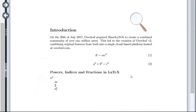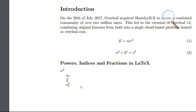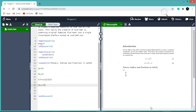So here you can see a₁². In this way you can write both powers and indices simultaneously. Whenever you download your PDF you will get n², a₂, a over b, and a₁² like this. Thank you, see you in the next video.